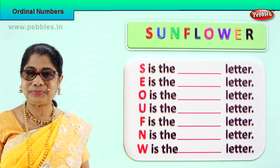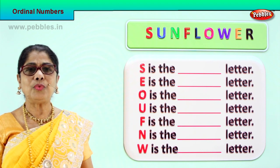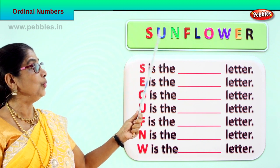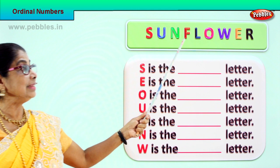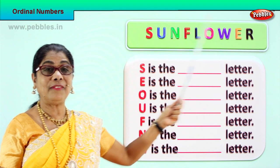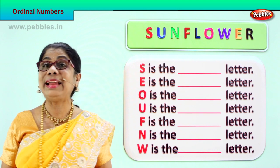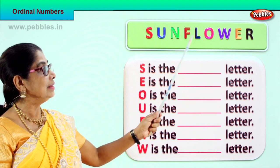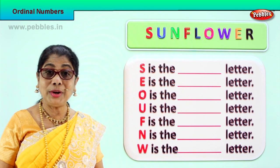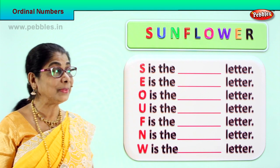Look what we have here. Here we have a single beautiful word. Can you read the word for me? You have sun. S-U-N, sun. Next, flower. F-L-O-W-E-R, flower. Sunflower. What do you have on the top here? Sunflower. Now each of these letters of the sunflower, let's see what is the ordinal position. We are learning ordinal numbers.